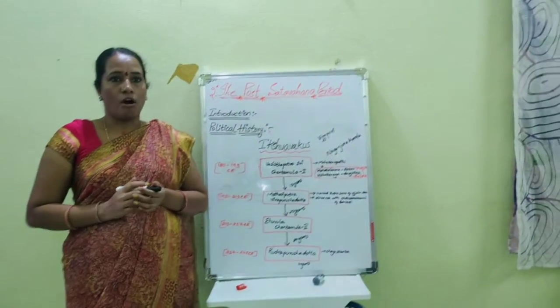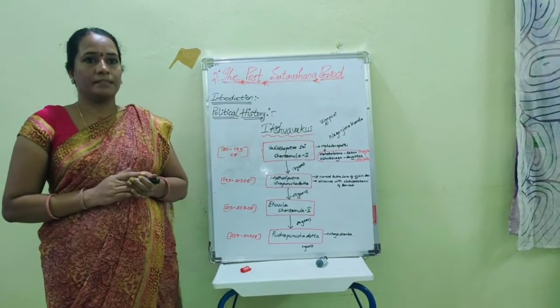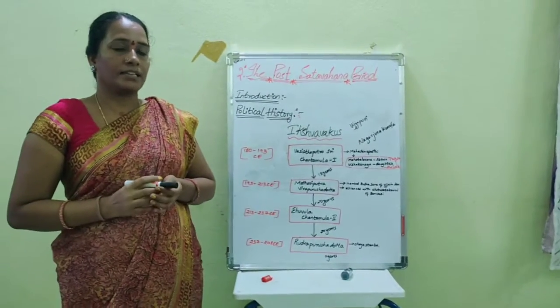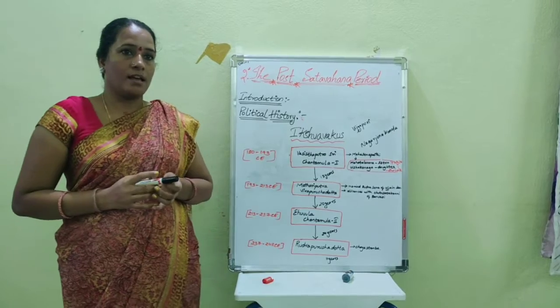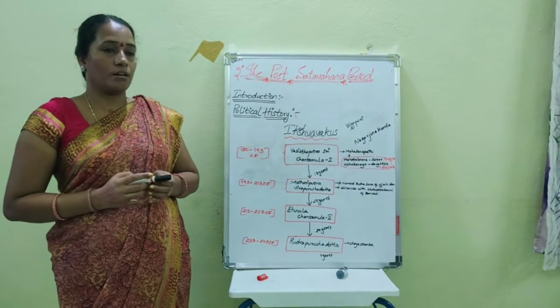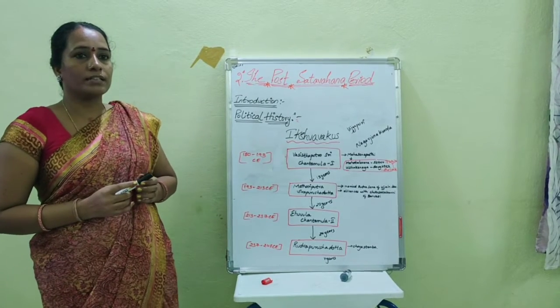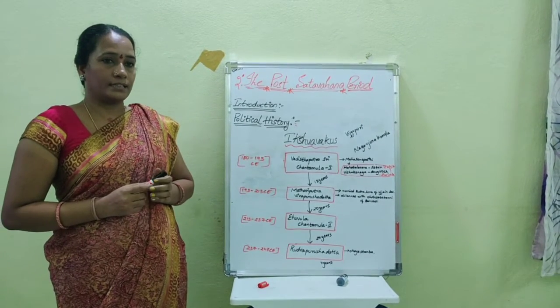Immediately after the fall of the Satavahana period, by 225 CE, Telangana came under rule of the Ikshvaku dynasty. Their origin is not known. The Ikshvakus succeeded in slowly carving small kingdoms of central Deccan.